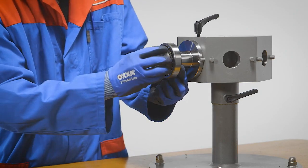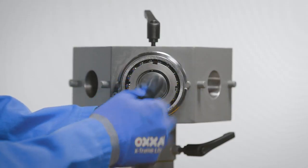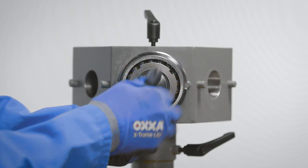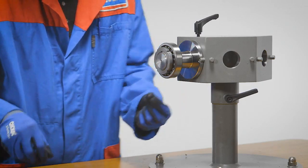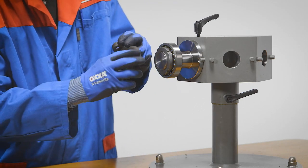Put the bearing on the sleeve in its appropriate position. Screw on the lock nut but without the lock washer. Hand tighten the lock nut by using the lock nut spanner until bearing and sleeve grip the shaft.